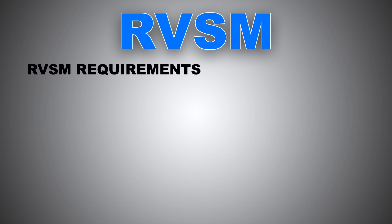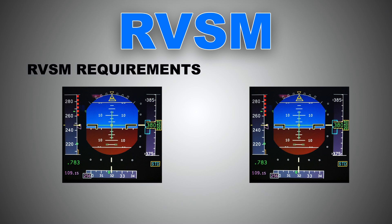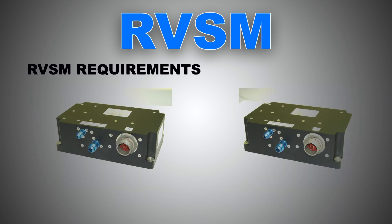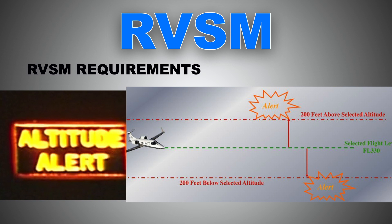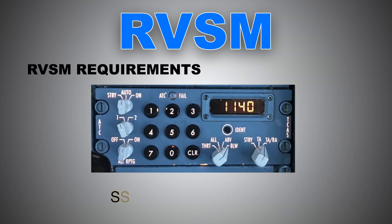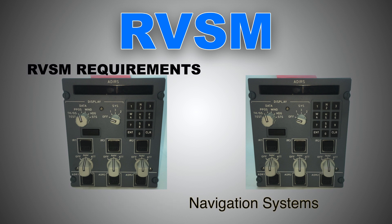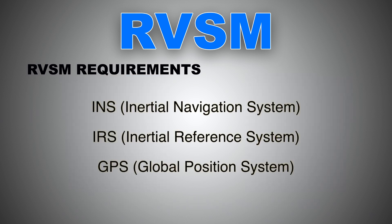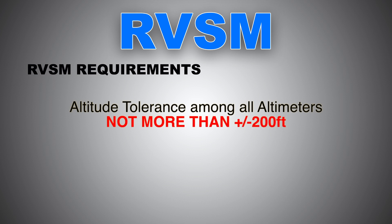RVSM requirements: besides crew qualification and airline paperwork from the appropriate authorities, each aircraft must be equipped with the following minimal equipment before it can be RVSM approved: two independent altimeters, two air data computers, at least one autopilot with altitude-maintaining function, an altitude deviation alerting system, an SSR transponder Mode C or later, and a minimum of two long-range navigation systems such as INS, IRS, or GPS.